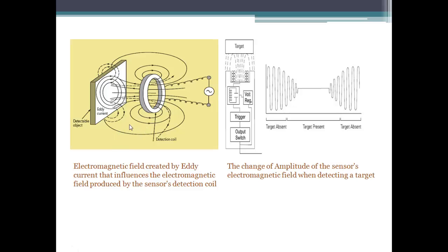the electromagnetic field emitted from the sensor produces eddy currents circulating around the target surface. This eddy current generates its own electromagnetic field that influences the oscillator field of the sensor. It decreases the amplitude of the electromagnetic field produced by the sensor.